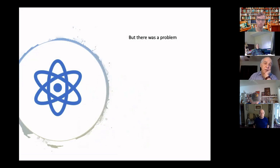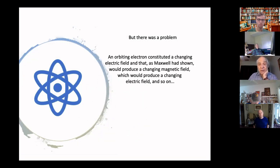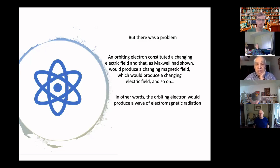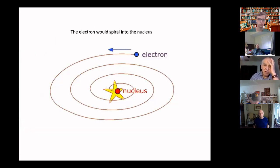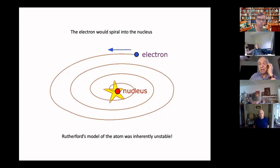But there was a problem — there's always a problem. If you have an orbiting electron, that constitutes a changing electric field. But Maxwell had shown that a changing electric field produces a changing magnetic field, which in turn would produce a changing electric field and so on. An orbiting electron would produce an electromagnetic wave. If the electron is radiating, it's going to be losing energy and wouldn't be able to sustain the orbit around the nucleus. What's going to happen is that the electron is eventually going to collapse into the nucleus as it loses energy. In other words, Rutherford's model of the atom is inherently unstable. Nice try, but no good.